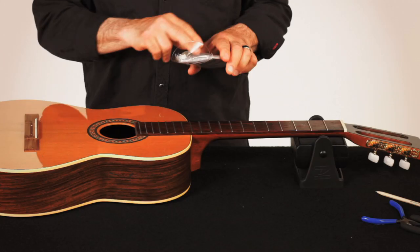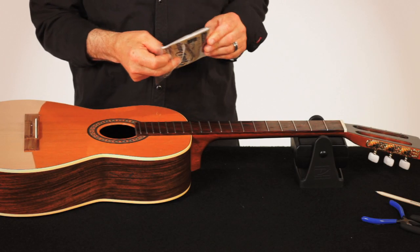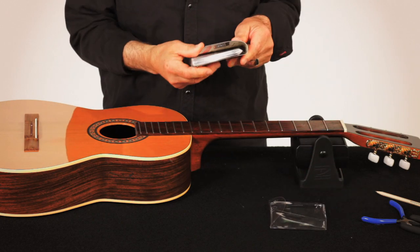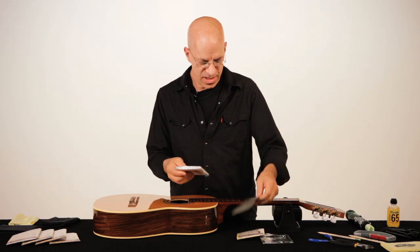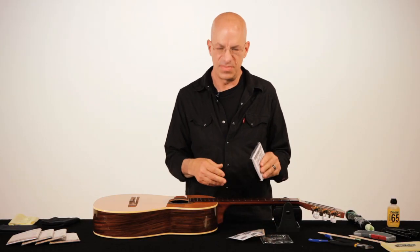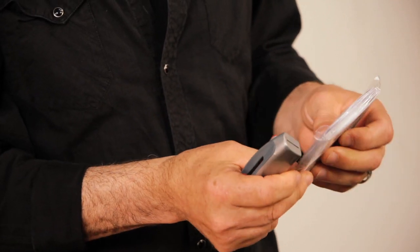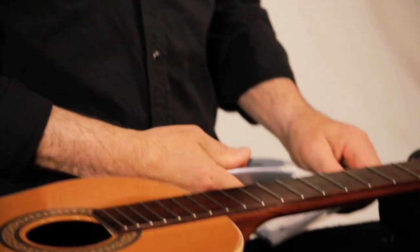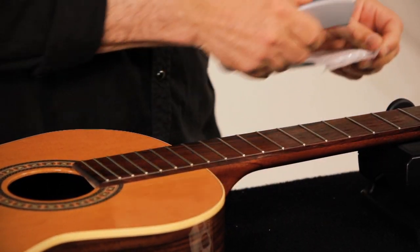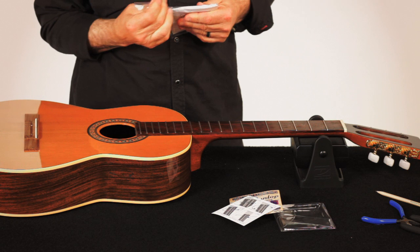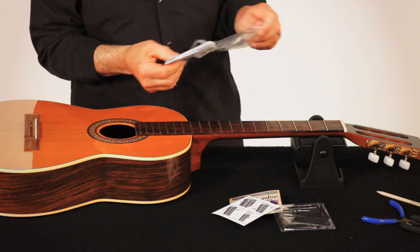So we're going to do a classical, which lends itself to its own set of problems. Pick a nice string, something you know or use. The Dunlop strings nicely come in an airtight pack, it keeps them fresh. Don't want to start off with rusted or old strings.